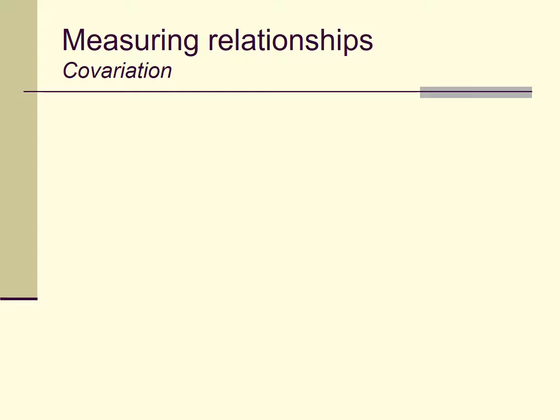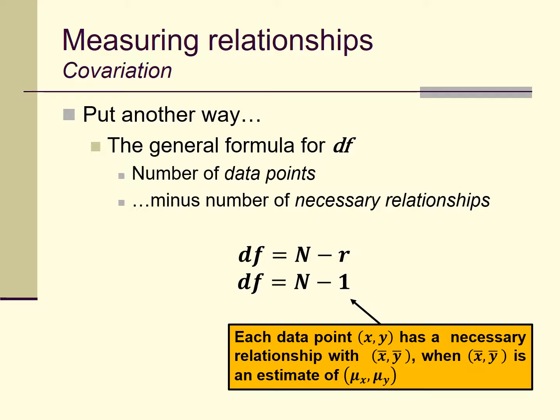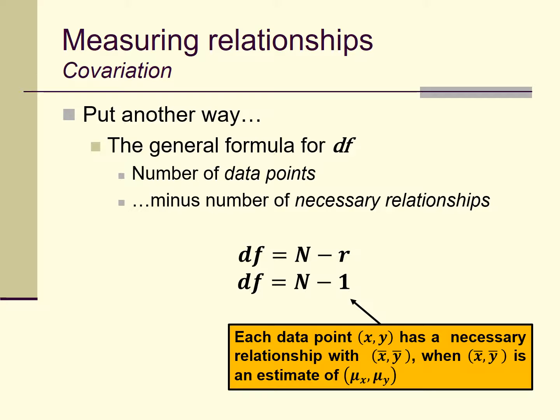Another way to think about this is our general formula for degrees of freedom: df equals n minus r, where r is the number of necessary relationships. In this case r equals one, because each data point — each x-y pair — has a necessary relationship with the sample mean when that mean is used to estimate the population mean. We'll return to degrees of freedom again throughout the course.